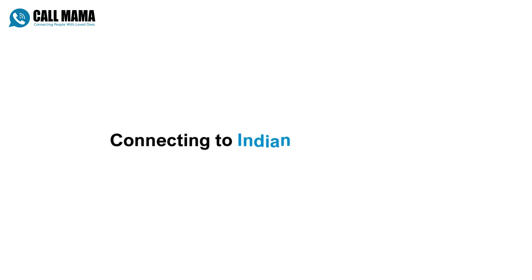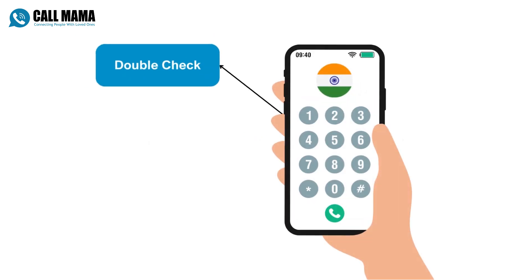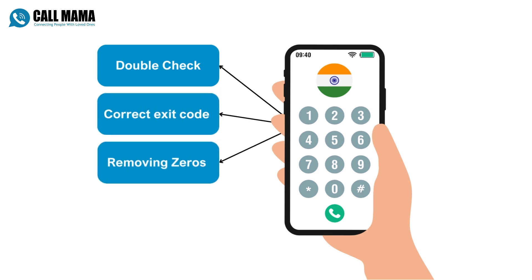If you're having trouble connecting to an Indian phone number, double-check the number you're dialing to make sure it's correct. Ensure you're using the correct exit code for your country. Try removing any leading zeros from the phone number.